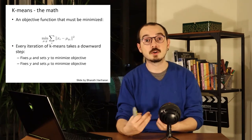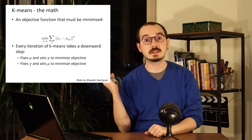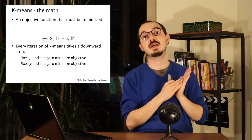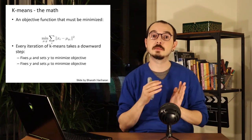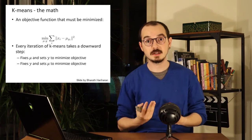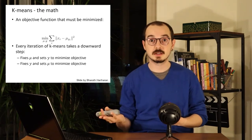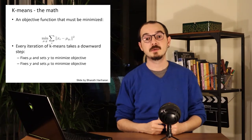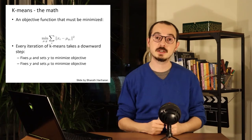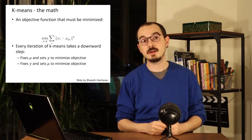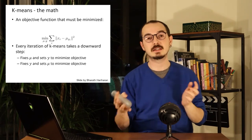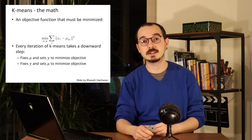If we write down our objective function mathematically, we are summing up all the pixels with their assignments. When doing the mean computation, we are changing the assignment variable y to minimize this error. And when computing the means, we are changing the mean parameter while keeping y fixed to minimize this error. Each iteration keeps minimizing this error in a slightly different way until we get our final result.